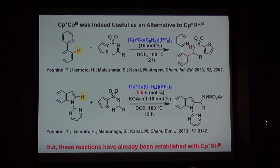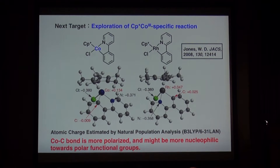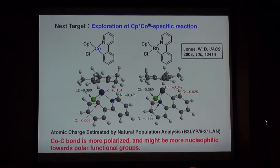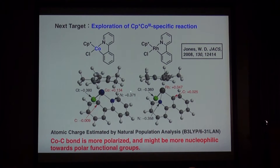We should do something additional with first-row transition metals. Our next target was the exploration of CpStar-cobalt-specific reactions. To start that, we checked the properties of cobalt and rhodium in detail. Because Professor Bill Jones reported the detailed structure of rhodium metallacycles in 2008, we synthesized the analogous cobalt metallacycle and compared its structures, estimating the atomic charge by natural population analysis. It clearly indicated that cobalt is more cationic and more Lewis acidic, and the cobalt–carbon bond is more polarized with the carbon being more anionic, so it should be more nucleophilic towards polar functional groups.